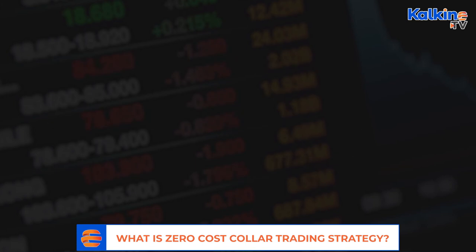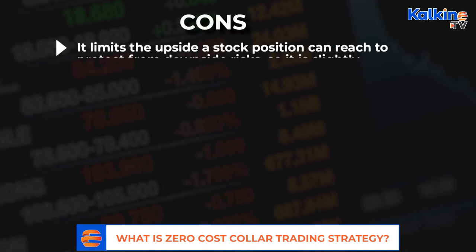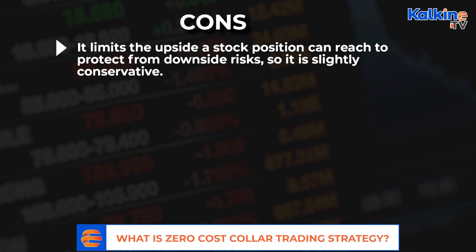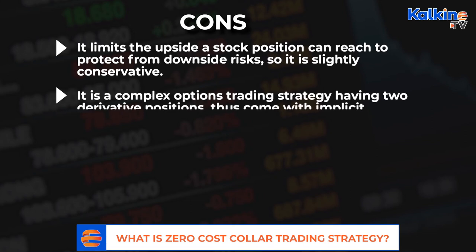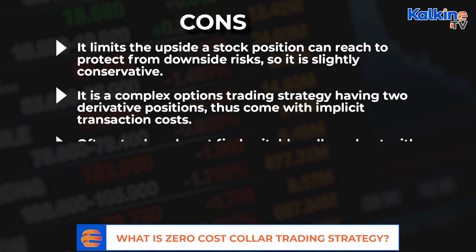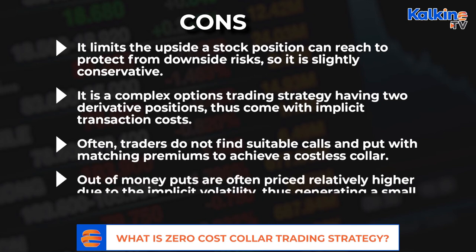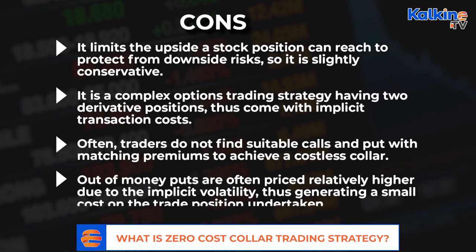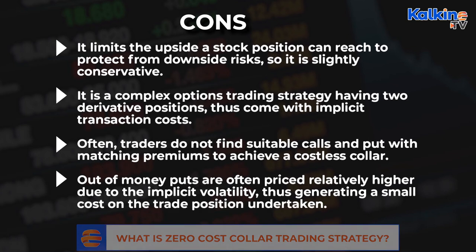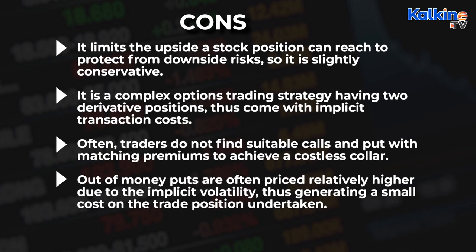On the flip side, the major drawbacks of zero-cost collar are that it limits the upside a stock position can reach to protect from downside risk, so it is slightly conservative. It is also a complex options trading strategy having two derivative positions, and thus it comes with implicit transaction costs. Also, often traders do not find suitable calls and puts with matching premiums to achieve a costless collar, and out-of-money puts are often priced relatively higher due to implicit volatility, thus generating a small cost on the trade position undertaken.